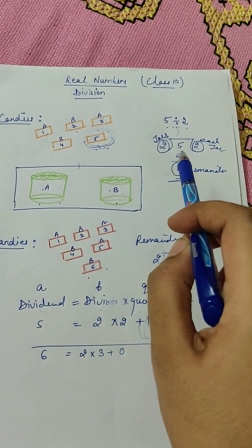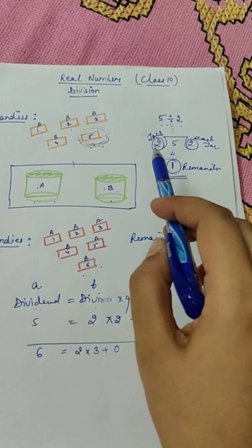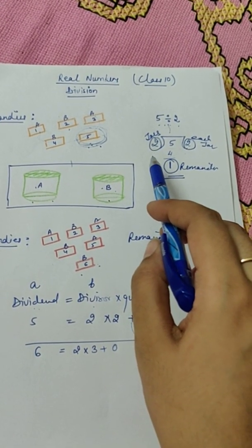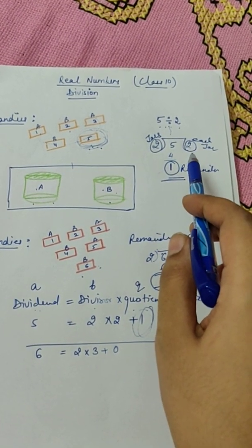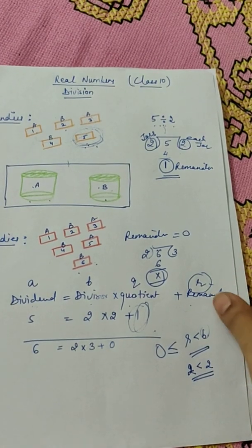So how are we going to write it numerically? Numerically it can be written as five candies are divided by two boxes. So each box will contain two candies and your one will be the remainder.